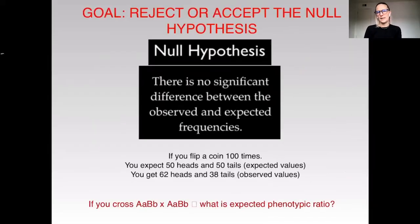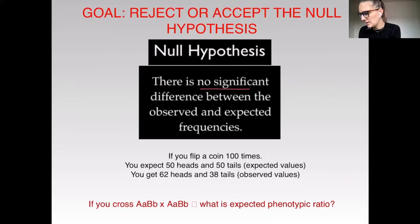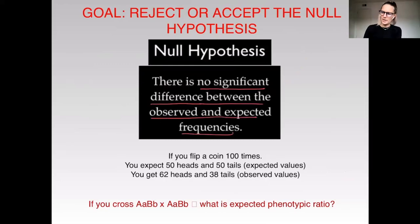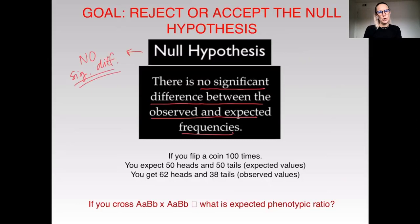The goal with the chi-square analysis is either to reject or accept a null hypothesis. Some of you in AP stats may have heard of a null hypothesis before. The null hypothesis always states there is no significant difference between the observed and the expected. When you think of null, you should think: no significant difference.